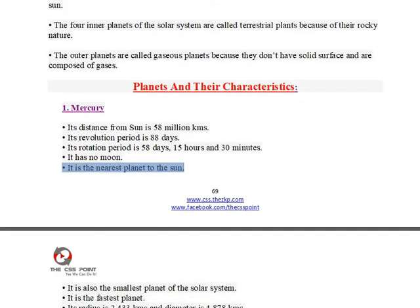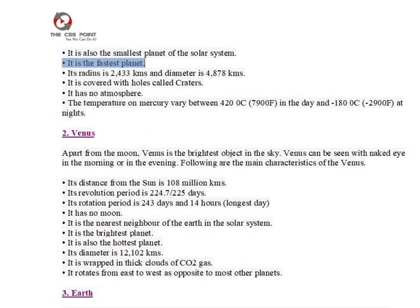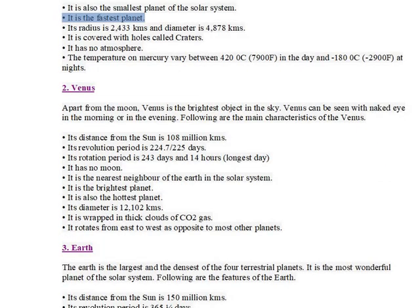Mercury is the nearest planet to the sun and also the smallest planet of the solar system. It is the fastest planet. Its radius is 2433 km and diameter is 4878 km. It is covered with holes.